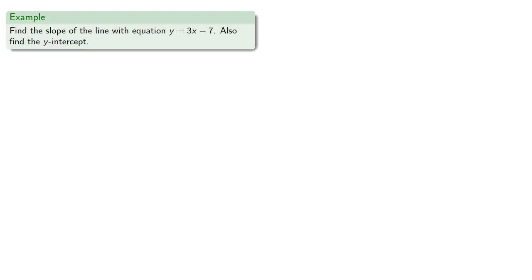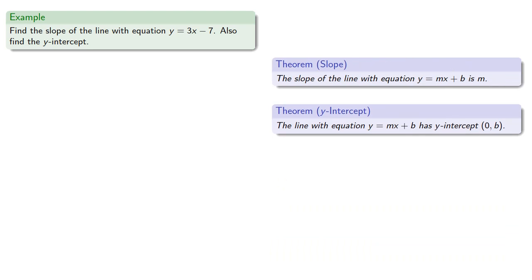So, let's find the slope of the line with equation y equals 3x minus 7, and let's also find the y-intercept. So, our theorems say that if the line has equation y equals mx plus b, we can read off the slope and the y-intercept. And so here, the line with equation y equals 3x minus 7, the slope is the coefficient of x.